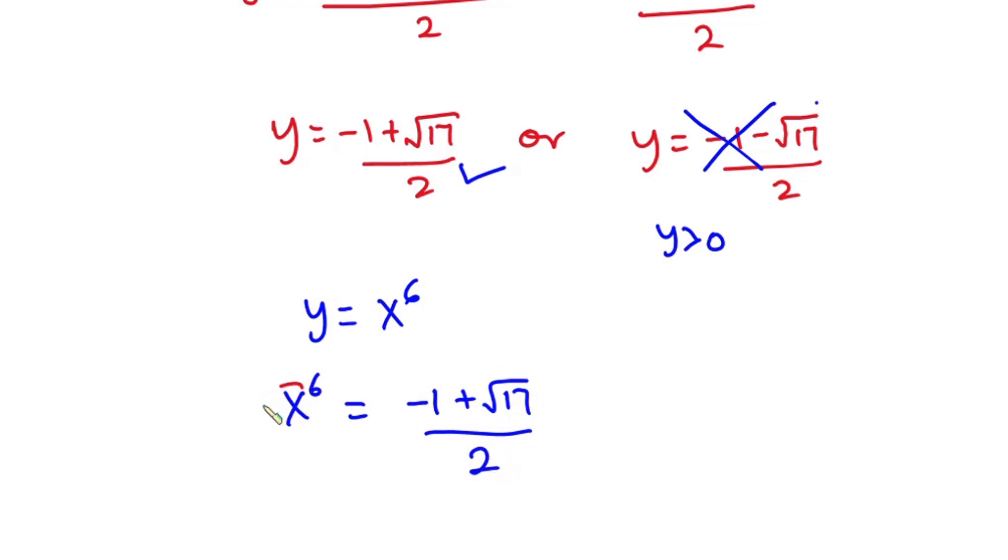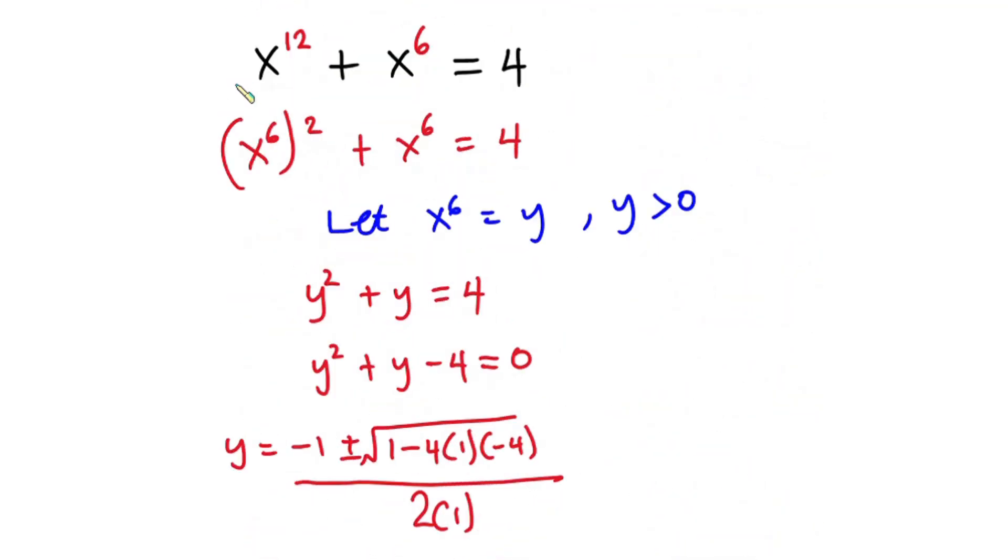Right, we are looking for x. So let's take 6th root on both sides. And I'm going to introduce plus or minus here because from this original equation you can see the powers are even numbers. So negative value of x can still work.